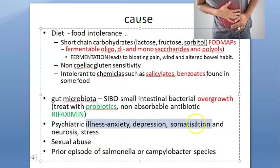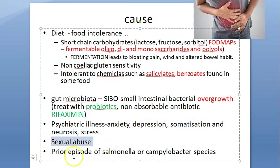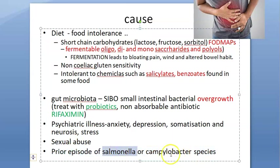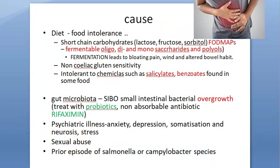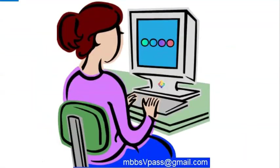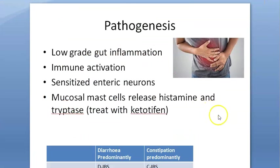Psychiatric illness can also be present in these people, including anxiety, depression, somatization, neurosis, and stress. They may have a history of sexual abuse or significant stress. A previous episode of gastroenteritis due to Salmonella (typhoid) or Campylobacter can also be a cause.